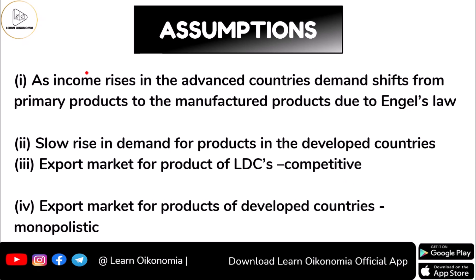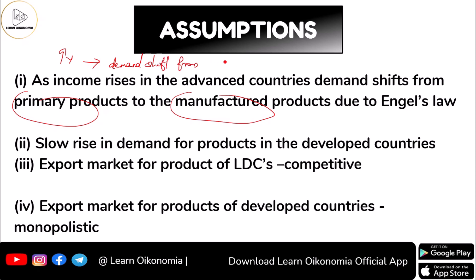Now let's look at the assumptions of this theory. It says that as income rises in advanced economies, there is a shifting demand from primary products to manufactured products. This has been explained by Engel's Law, which is the main reason for this kind of demand shift in developed economies as a result of increase in income.